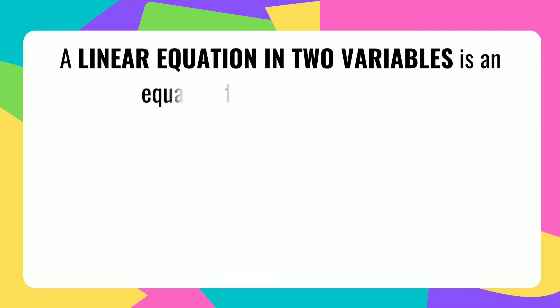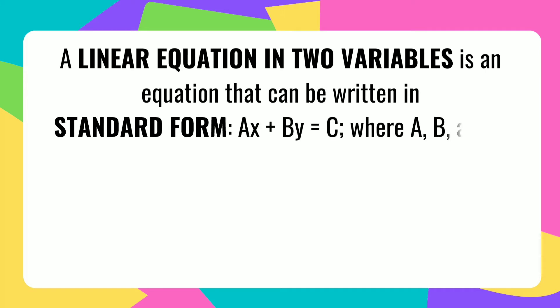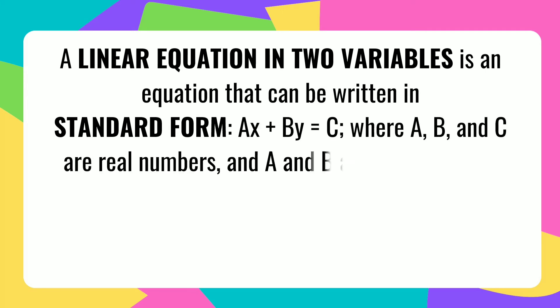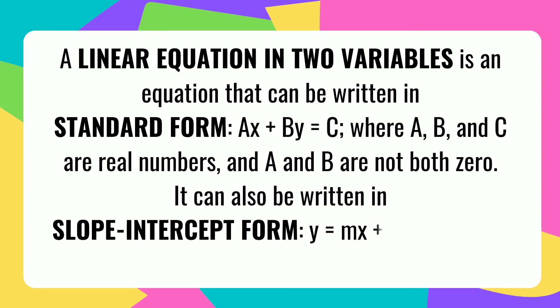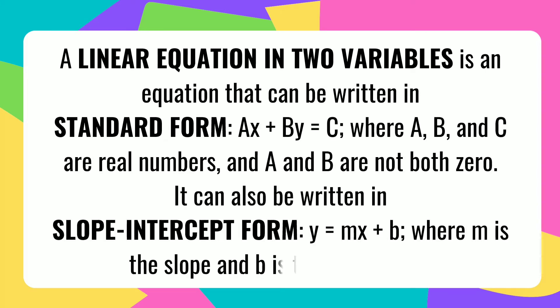A linear equation in two variables is an equation that can be written in standard form ax plus by equals c, where a, b, and c are real numbers, and a and b are not both zero.